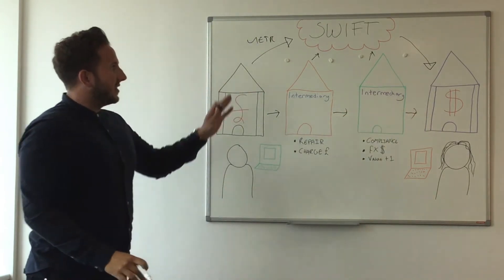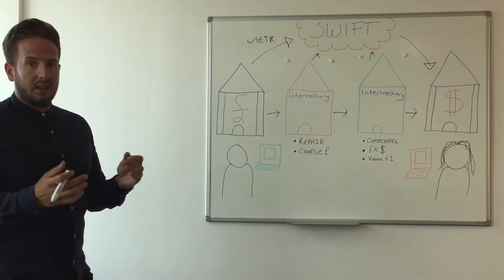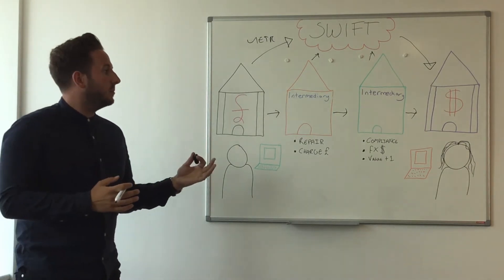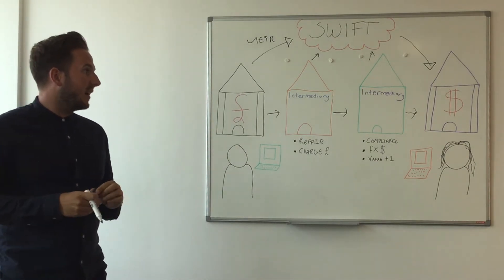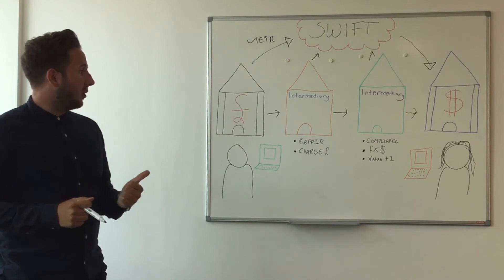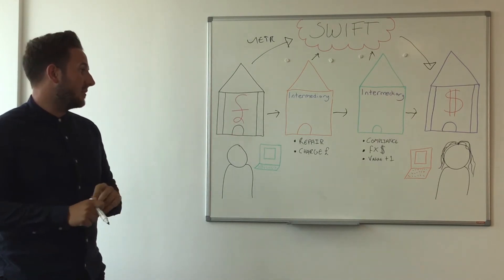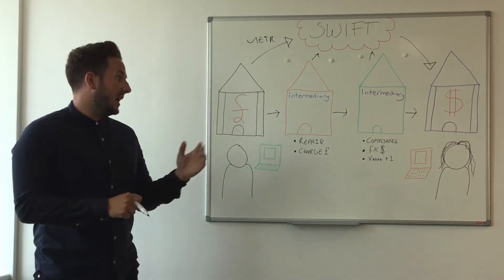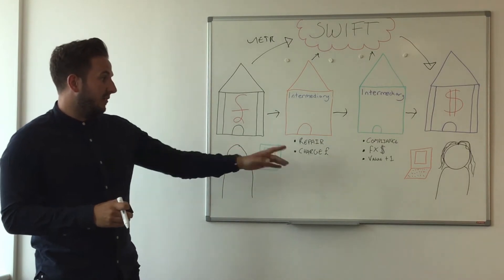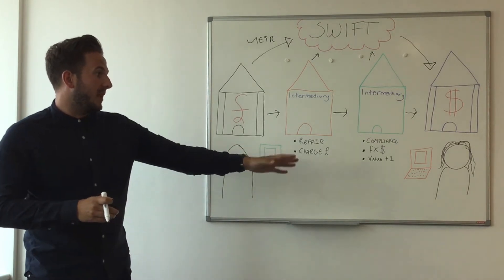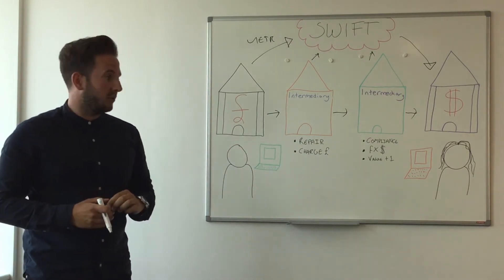With this new dataset that GPI provides, it allows the banks to know where a payment is at any time — to see what charges are involved, any repairs that there might be at intermediary banks, any compliance checks and foreign exchange, and ultimately what value the beneficiary customer is going to receive in their account for those funds.